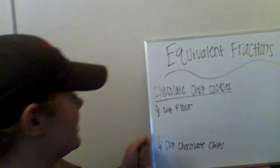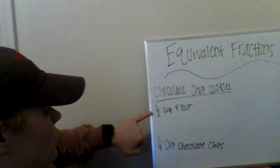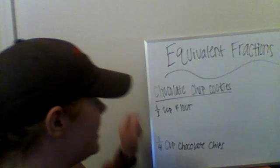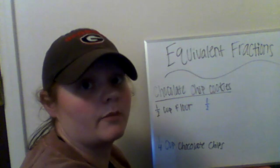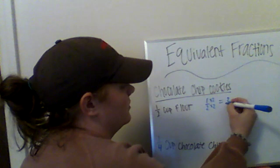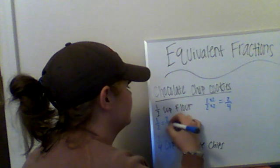So if I look at my recipe, it calls for one-half cup of flour and one-fourth cup of chocolate chips, and I want to make equivalent fractions with one-half and one-fourth. I'm going to multiply a specific whole number by my numerator and denominator. I like to multiply things by the least amount possible, so I'm going to multiply by two first. One times two is two, two times two is four. So one-half is equivalent to two-fourths.